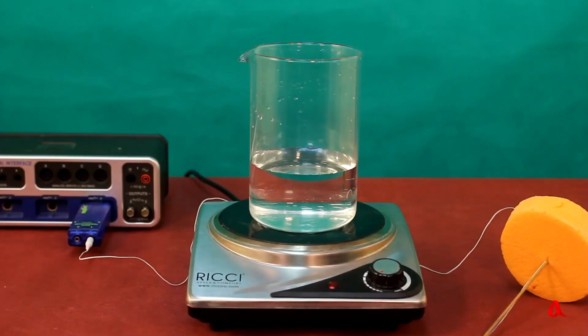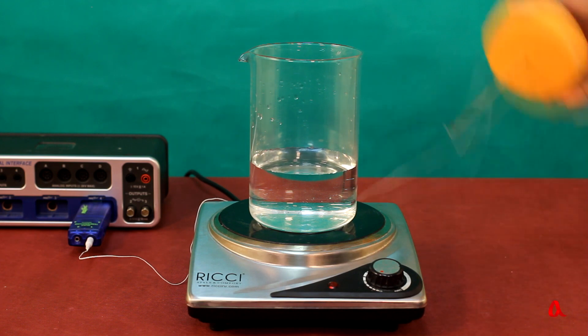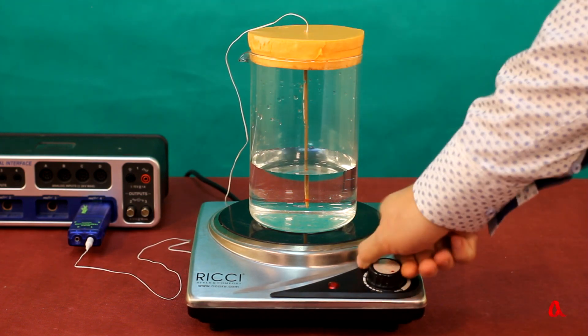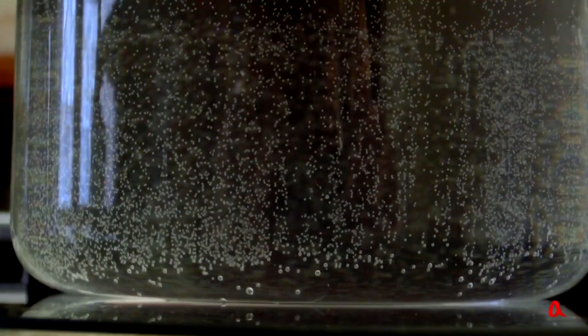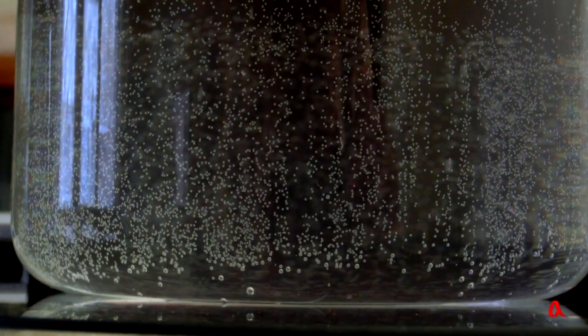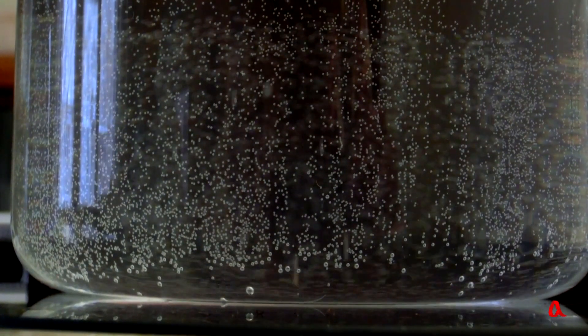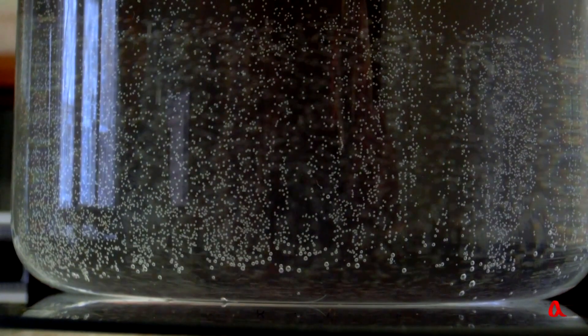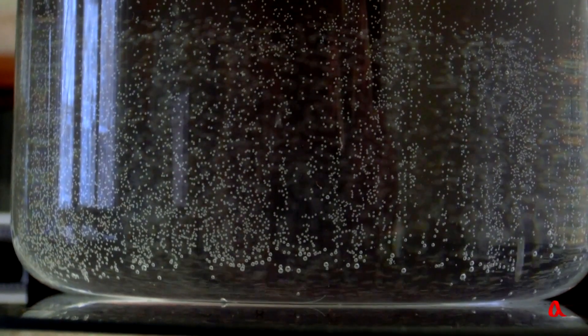To see what happens, we put a transparent glass full of water on a hot plate and measure the temperature inside it with a thermal sensor. When the water's temperature reaches 40 degrees, the walls of the glass get covered with tiny bubbles. But it has nothing to do with boiling. It's the way the air, which was dissolved in water, comes out of it.